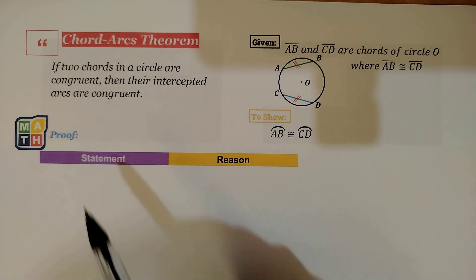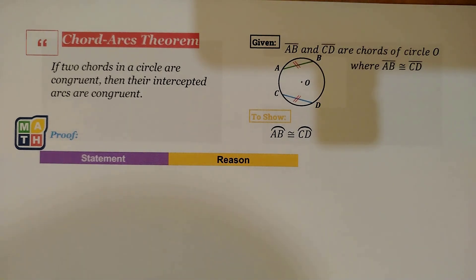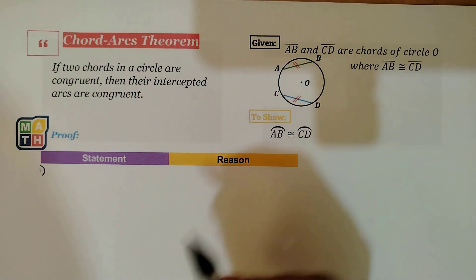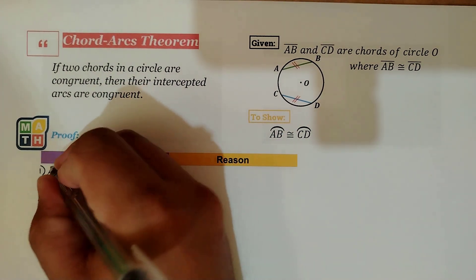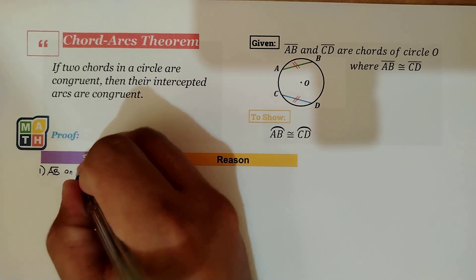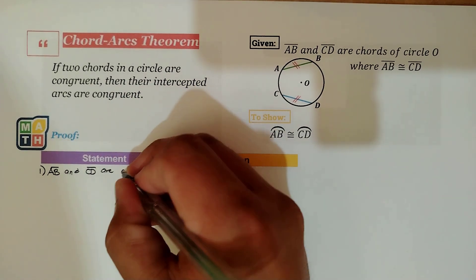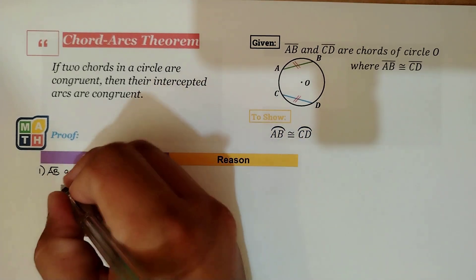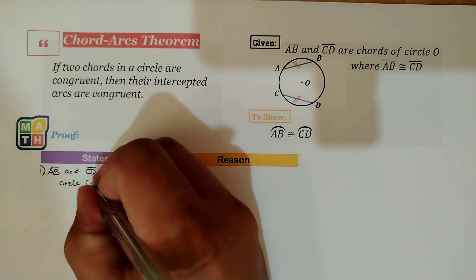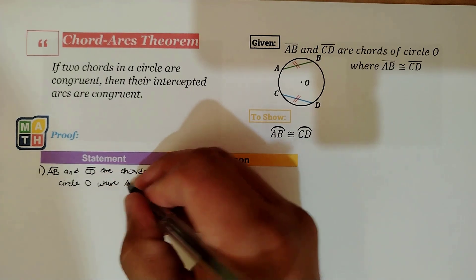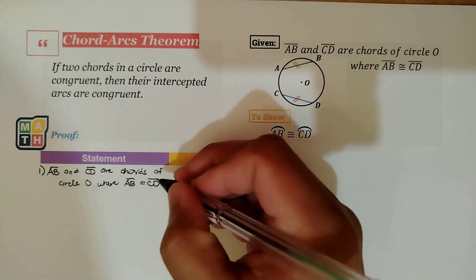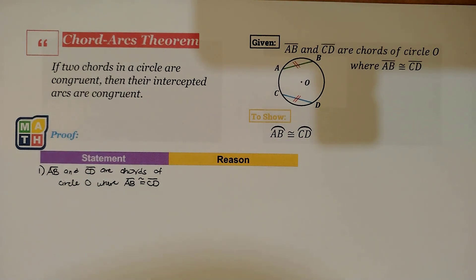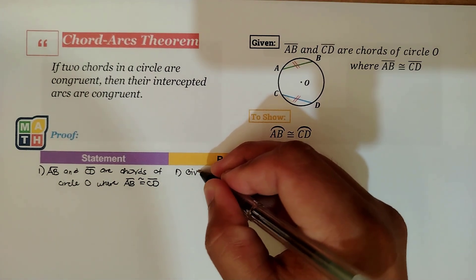We have here a two-column proof for this, as we need to establish this before we can use it in actual classes. The first part of the proof is always placing what is given, so we state that segment AB and segment CD are chords of circle O and are congruent to one another. The reason for this is obviously that it is what is given.